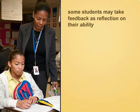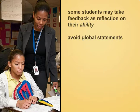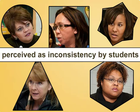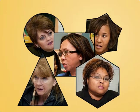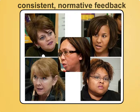Teachers should be aware that some students may take feedback as a reflection on their ability rather than their work on a specific assignment. It's important to avoid global statements like "you need to improve" that can reinforce this misconception. Feedback needs to be specific and clearly related to the relationship between the task and the goal at hand. Different teachers within a school often have their own approaches to feedback, which can be perceived as inconsistency, confusing students and even leading some to dismiss the feedback they receive. Having all teachers involved in professional development and peer collaboration around feedback can result in consistent, normative feedback procedures throughout the school.